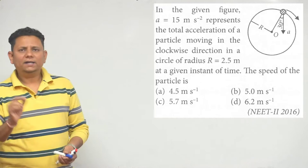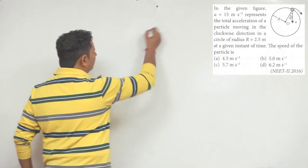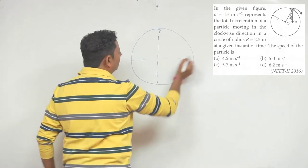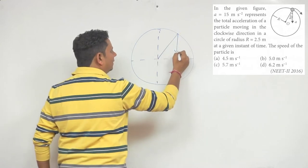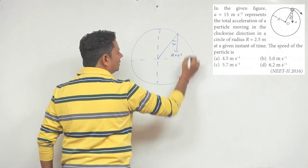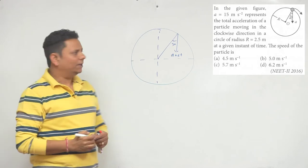This question, those who have a good concept will be able to attempt this. So, this is a given scenario where the particle is in circular motion. At this location where the angle is 30 degrees, there is a net acceleration. Its value is 15 meter per second square. We need to find the speed.